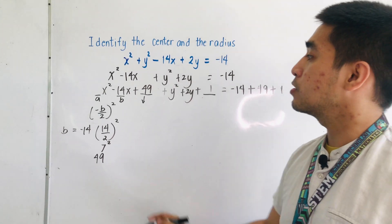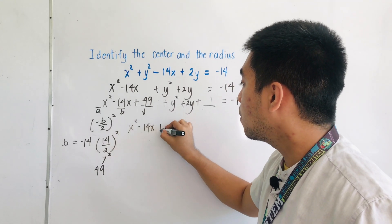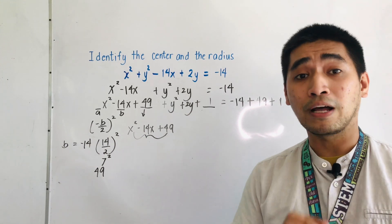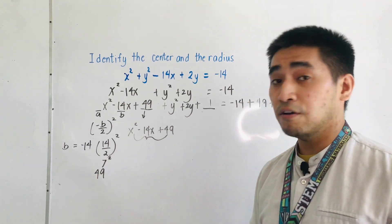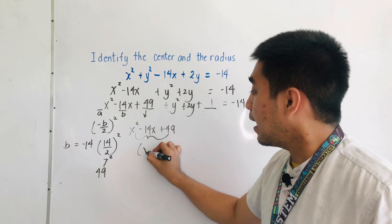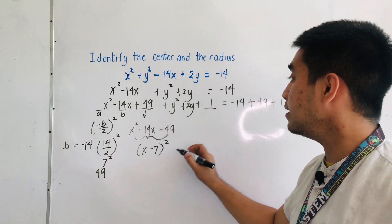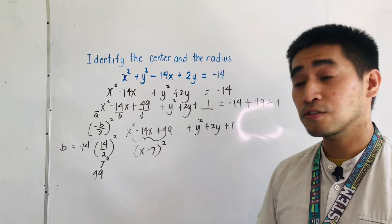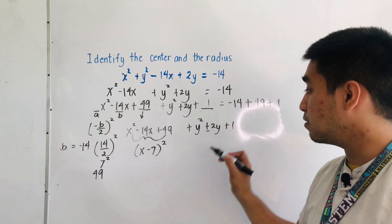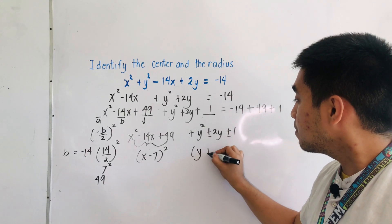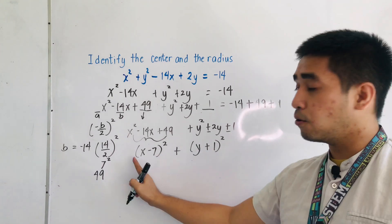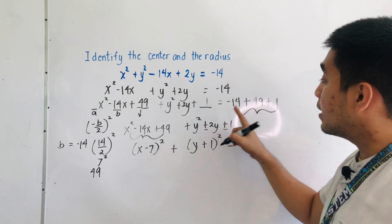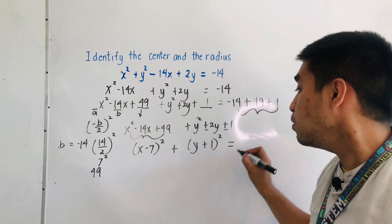So we now have x squared minus 14x plus 49. Let us factor this out. Since the sign is negative and the last term is positive, this becomes x minus 7, quantity squared. For the next one, y squared plus 2y plus 1 — since the middle term is positive and the last term is also positive, the factors are y plus 1, quantity squared. Therefore, the equation is now x minus 7 quantity squared plus y plus 1 quantity squared is equal to negative 14 plus 49 plus 1, which equals positive 36.